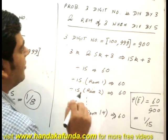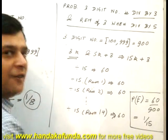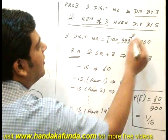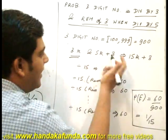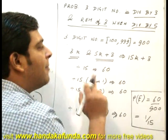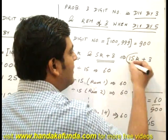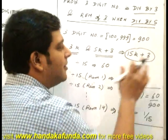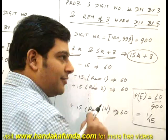They need to follow two restrictions. One, divisible by 3, so format 3K. Second, remainder of 3 when divided by 5, so 5K plus 3. My number has to follow both restrictions which can be merged to 15K plus 3. So my number has to be of the format 15K plus 3.